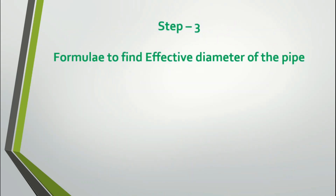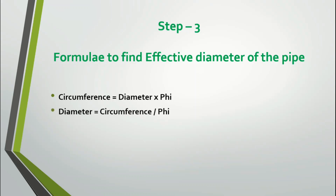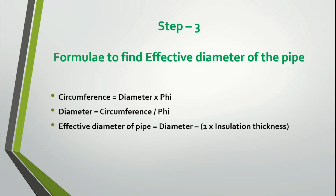The formula to find the effective diameter of the pipe: circumference equals diameter times pi, so diameter equals circumference divided by pi. The effective diameter of the pipe equals the total diameter of the pipe minus 2 times the insulation thickness. This value provides us with the effective pipe diameter excluding the insulation.